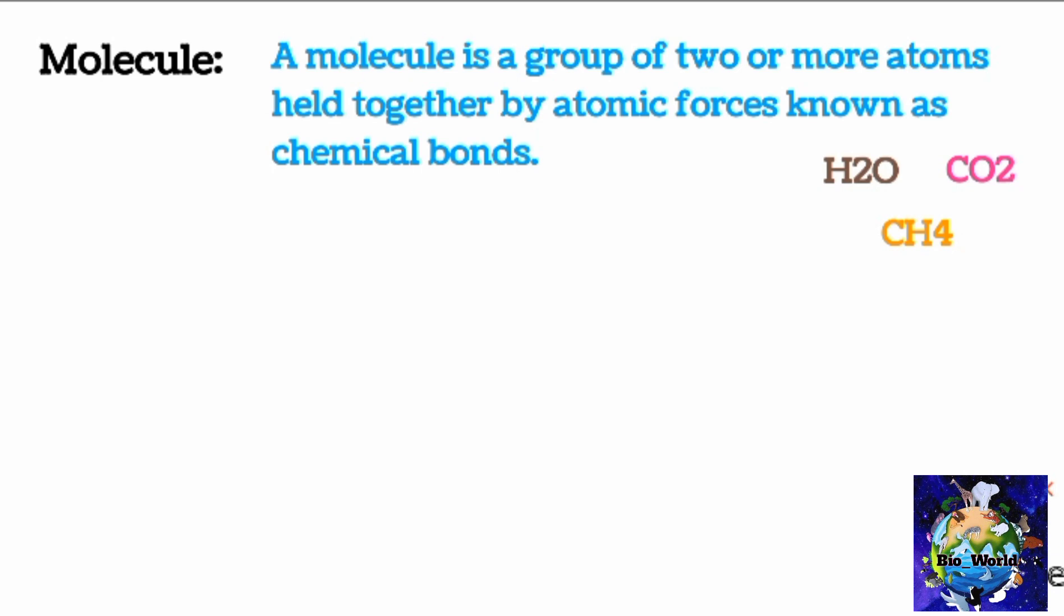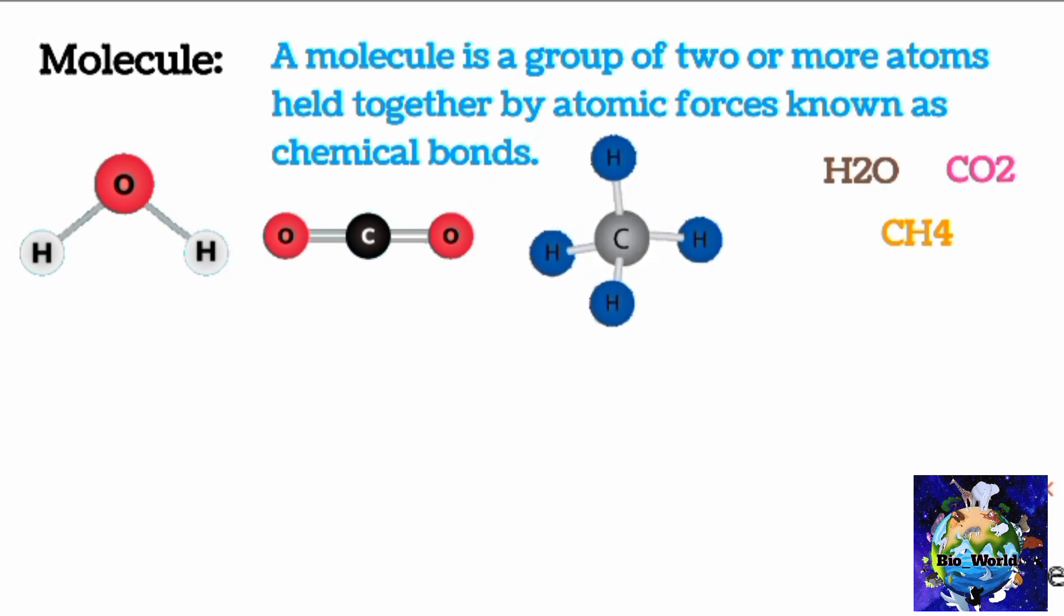You can see in these examples, two hydrogen atoms are bound to one oxygen atom, and in the second case one carbon is bound to two oxygen atoms, while in the third case one carbon atom is bound to four hydrogen atoms. Thus different atoms combine to make molecules and molecules combine to make products, such as H2O molecules combine to make water, CO2 molecules combine to make carbon dioxide gas, and CH4 molecules combine to make methane gas that we use at homes.